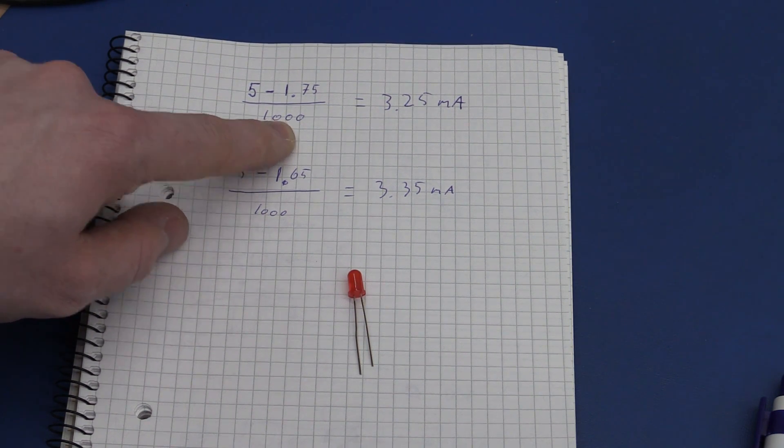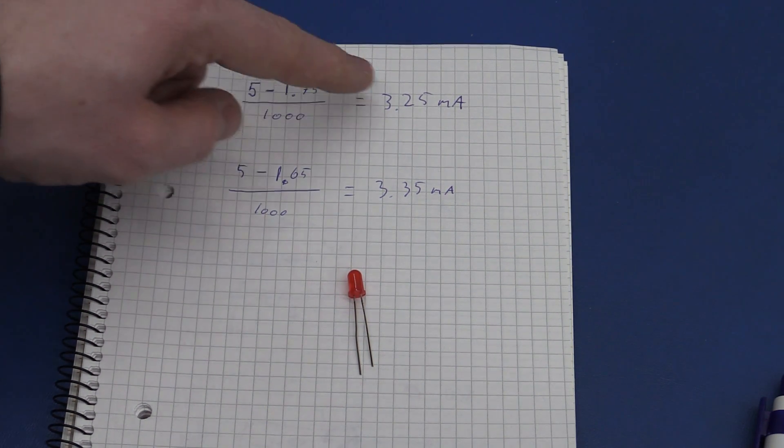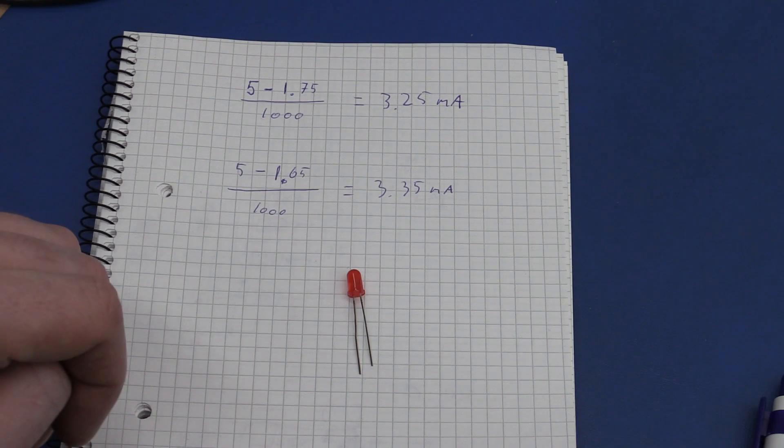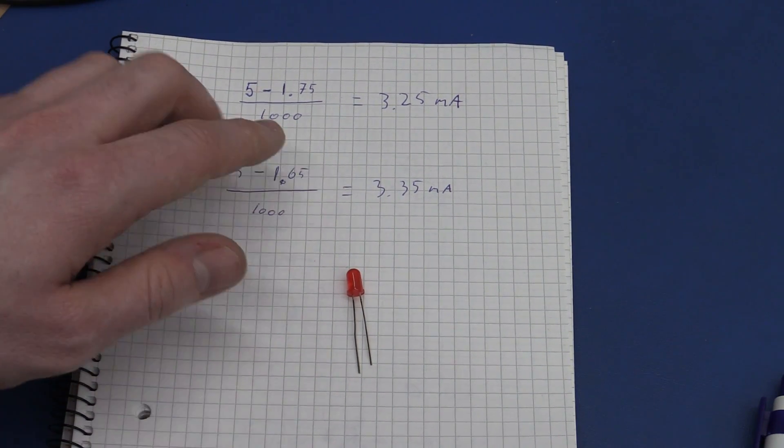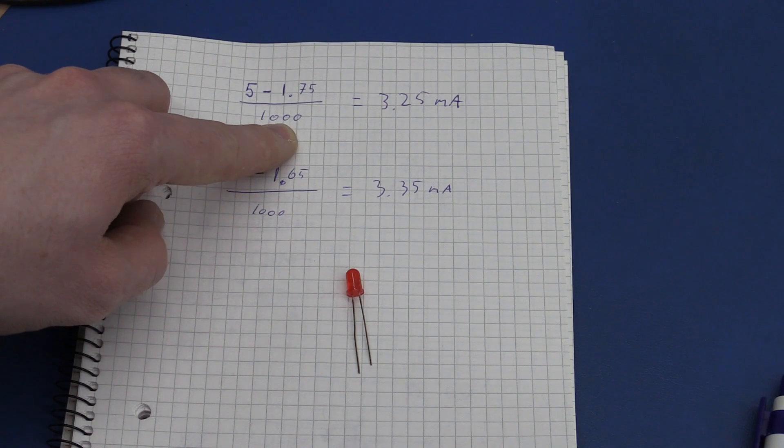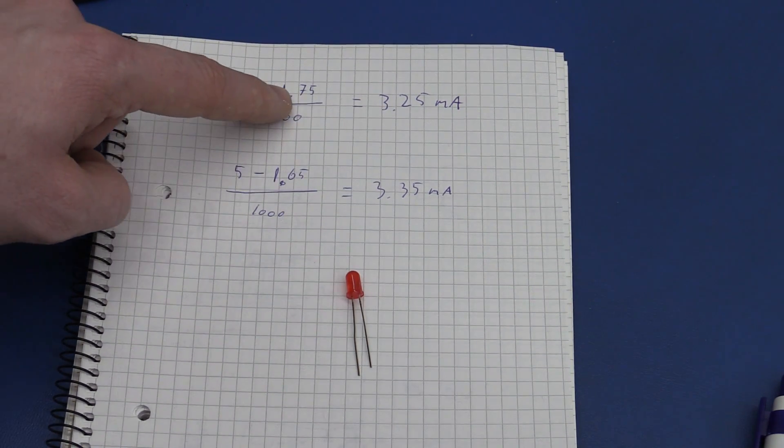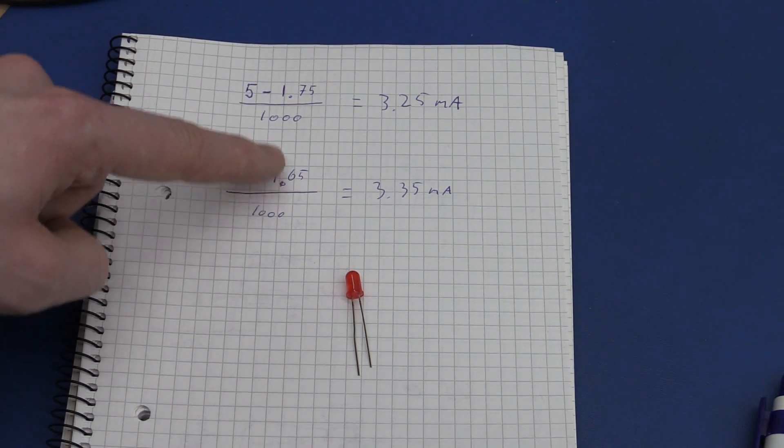We can decrease the resistance and decrease the voltage to get the same current and we would dissipate less energy in the resistor. But as this value gets lower the significance of the forward voltage gets higher.